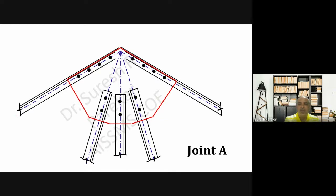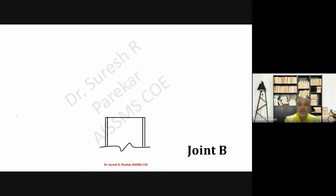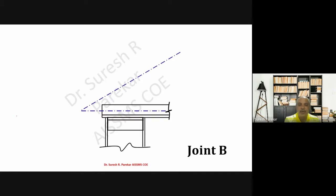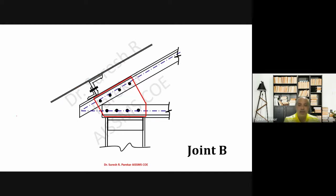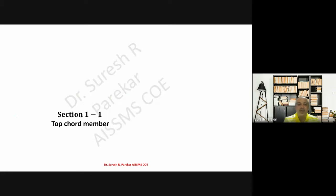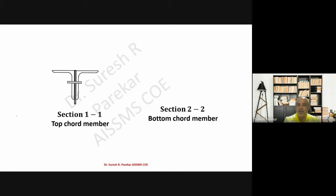This is Joint A — the Ridge Joint. Then we have the U-Joint at the support. Here again, centroidal lines are plotted first, then the top chord member, bottom chord member, then the purlin, then the gusset plate. Four bolts are used for the top chord and four for the bottom chord member. The roof is shown, along with the gutter and its joint. This is Joint B. For Section 1-1, we have the top chord member, and for Section 2-2 we have the bottom chord member with a double angle section.